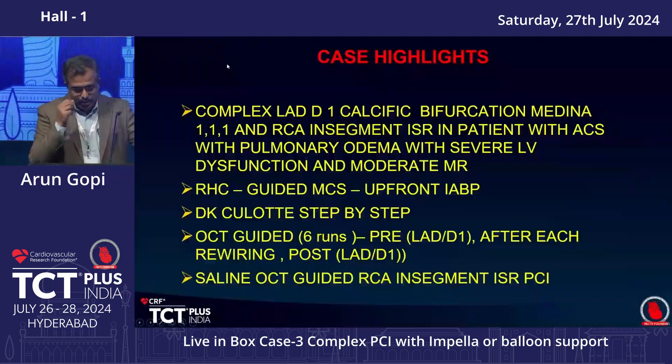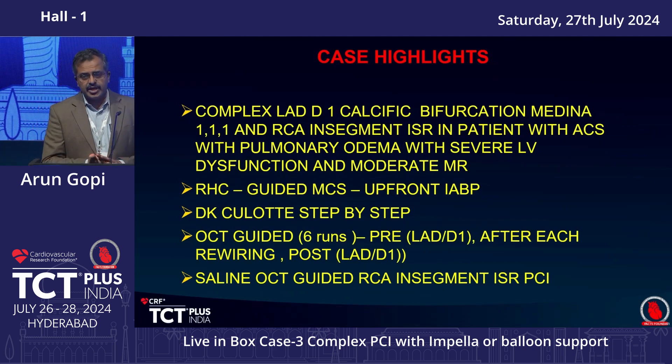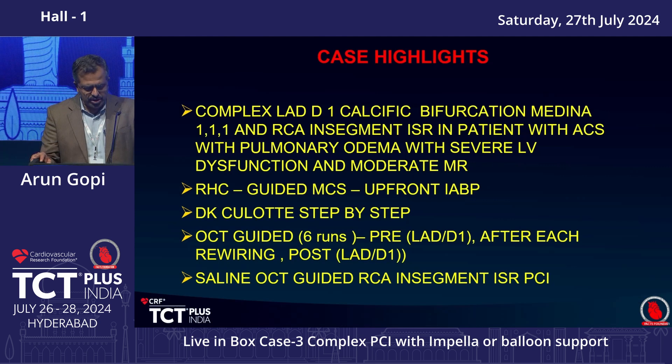We demonstrated a DK culotte with the double kiss modification — this makes side branch access easier, with lesser side branch stent distortion and lesser malapposition. It was purely OCT-guided with essentially six runs: two pre-runs on each vessel, one after each rewiring, and one on each vessel after final stent implantation. This case highlights complex LAD-D1 bifurcation in a patient with severe LV systolic dysfunction. Right heart cath was done upfront to decide MCS requirement, which clearly indicated MCS was needed. Due to financial constraints we used IABP; IVL could also not be used. The DK culotte was performed step by step, fully OCT-guided. For the RCA, saline OCT was used. Both ended with good angiographic and imaging-guided outcomes.